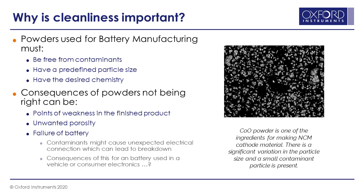The powders used for battery manufacturing must be free of contaminants. They typically must have a predefined particle size and have the right chemistry — all to ensure that the batteries being produced are made in a consistent way. Changes in particle size will lead to changes in the properties of the battery, and changes in chemistry will change the performance as well. Contaminants coming in could lead to weaknesses in the finished product, and if the particle size and shape are not right, it could lead to more porosity in the material, which would affect performance.